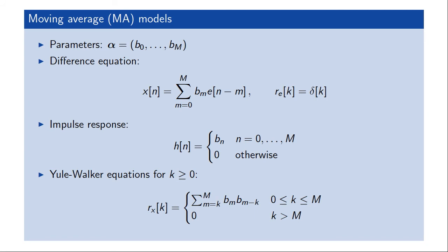In the moving average model, the parameters of interest are b0 to bm. The difference equations simplify accordingly. Using the fact that the impulse response of a pure moving average model is simply given by the coefficients themselves between 0 and m minus 1, inserting that into the Yule-Walker equation yields a set of equations that needs to be solved for the parameters b. We've been able to make this explicit assumption regarding the impulse response and remove that from the Yule-Walker equation. What we have is an equation just involving the b parameters — not linear, but a quadratic equation significantly simpler than the general ARMA Yule-Walker equations.